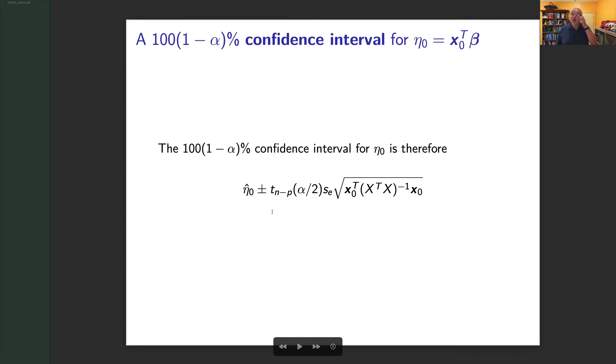That's what we call the 100(1-α)% confidence interval. So you basically take your β̂, you use that in your formula and your predicted values to get your point prediction, which is our η̂₀, plus or minus our cutoff, and then here is our standard error of this confidence interval.